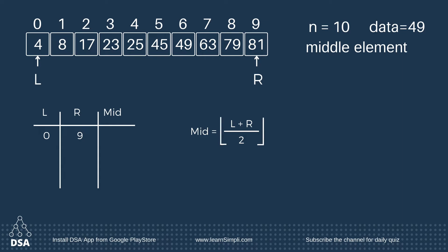That is L plus R divided by 2, and we take the floor value. So 0 plus 9 divided by 2 is equal to 4.5, and the floor value of 4.5 is 4. So the middle value is 4.